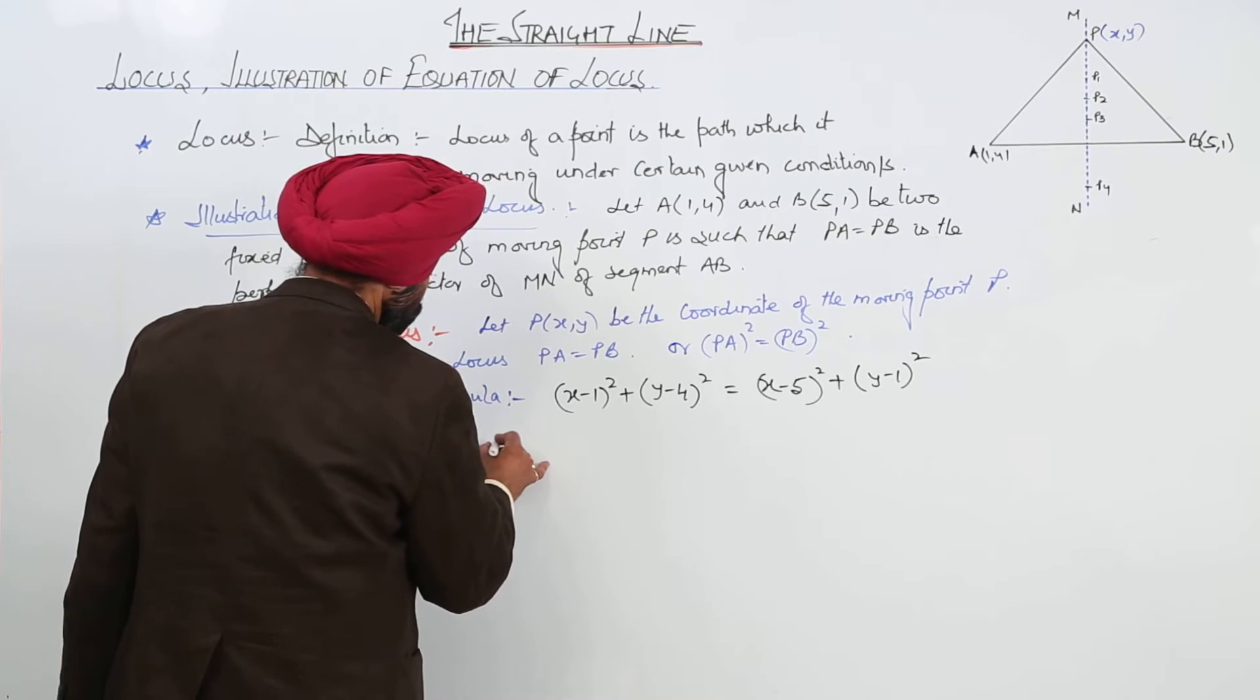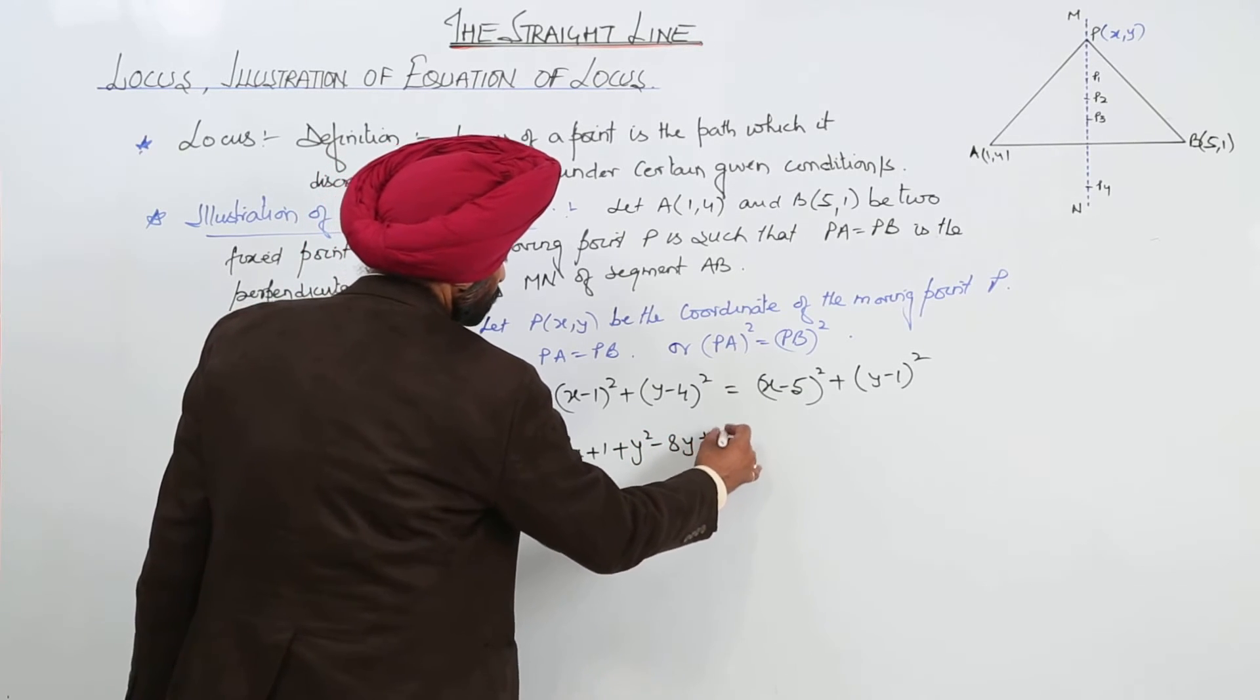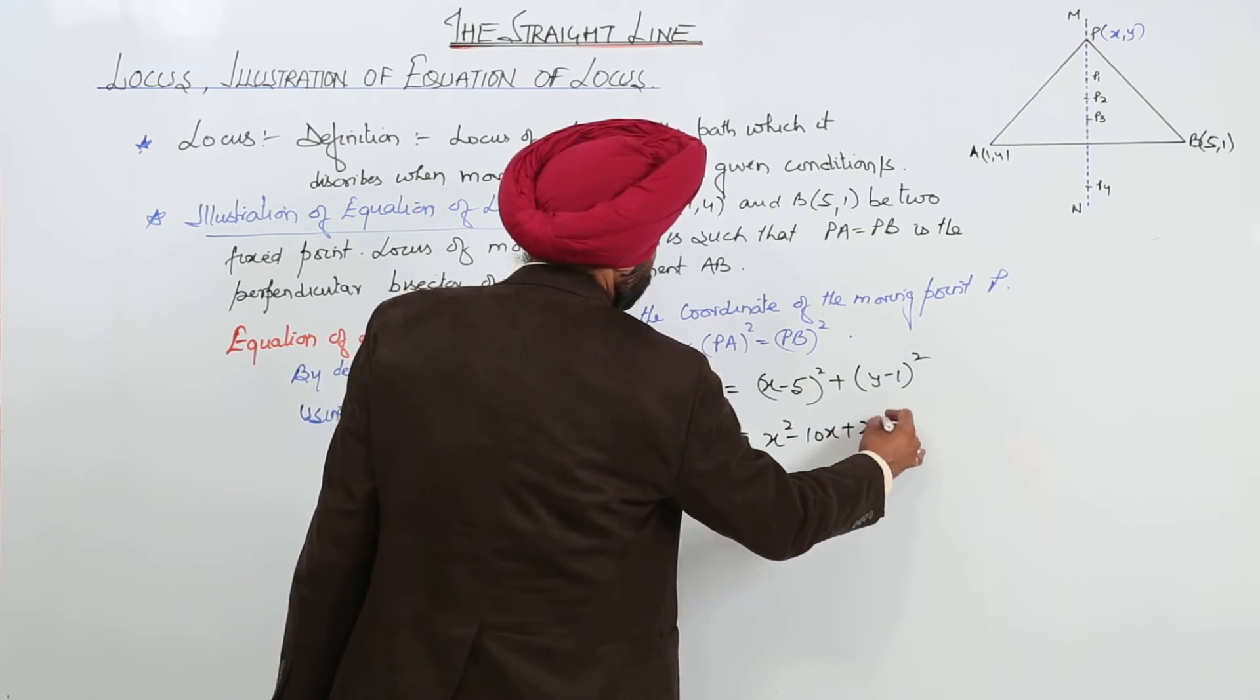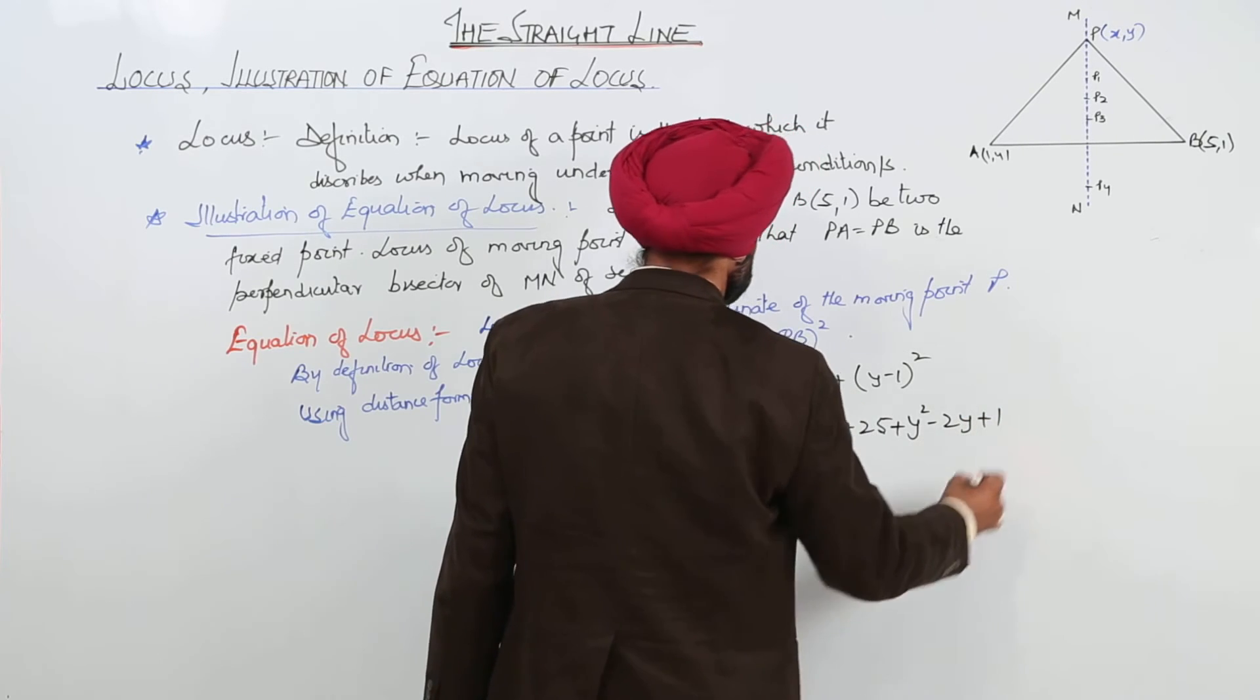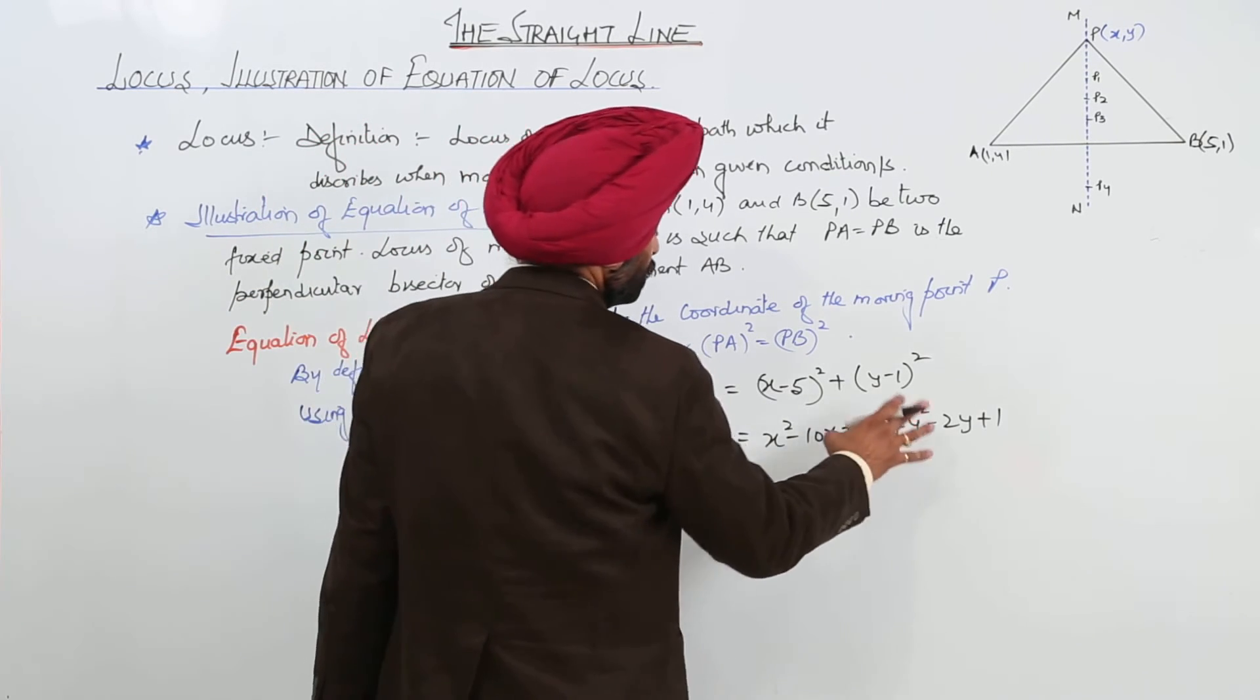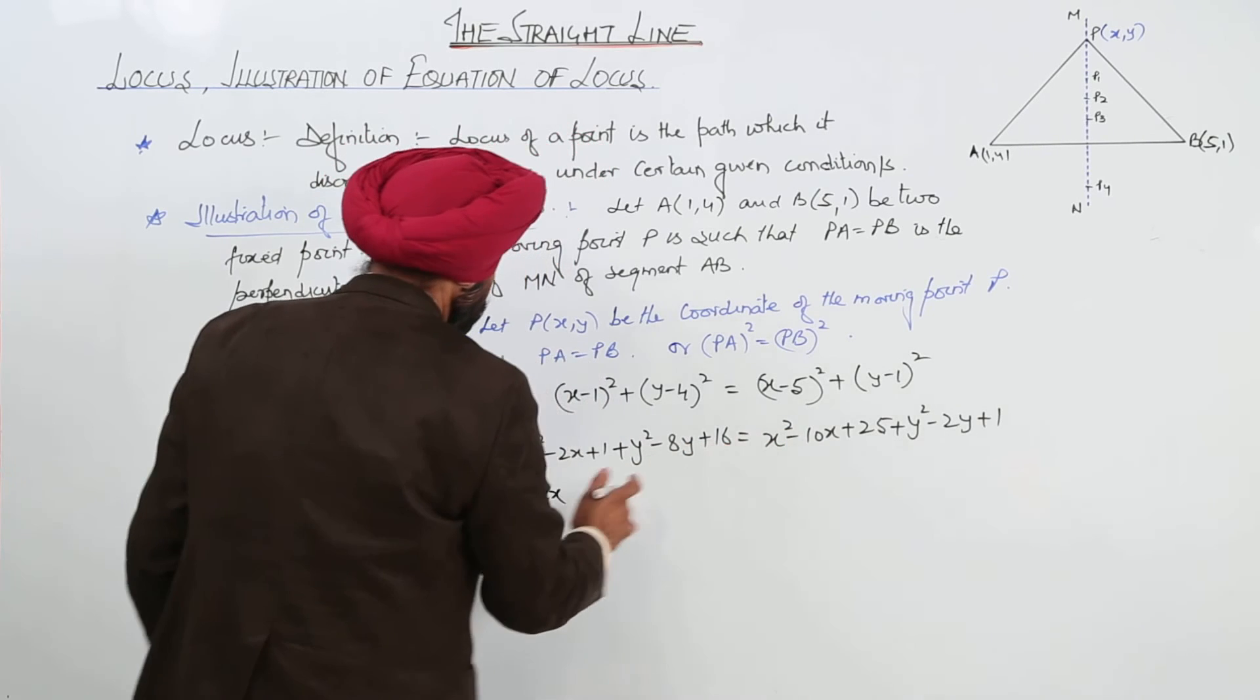Now, this gives X square minus 2X plus 1 plus Y square minus 8Y plus 16 is equal to X square minus 10X plus 25 plus Y square minus 2Y plus 1. So, now, here X square and Y square, here X square and Y square cancels. So, what is left?